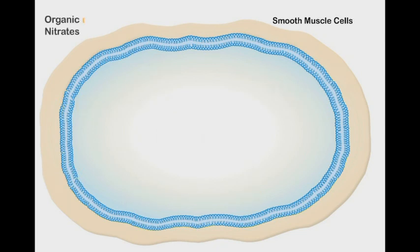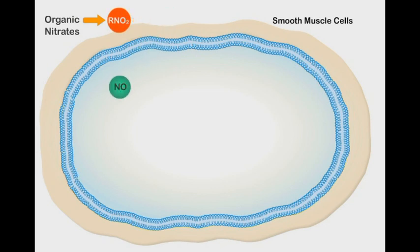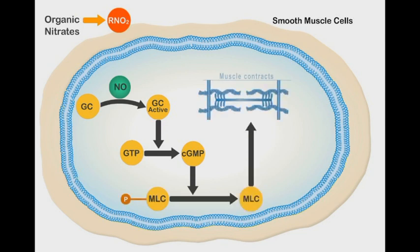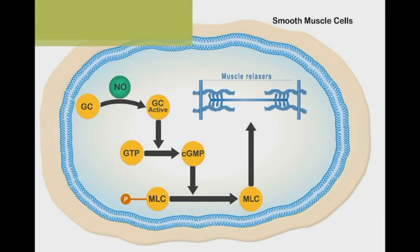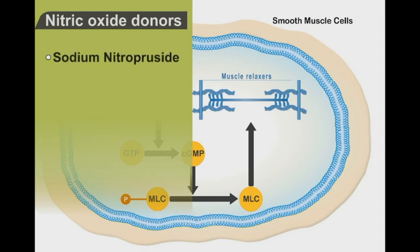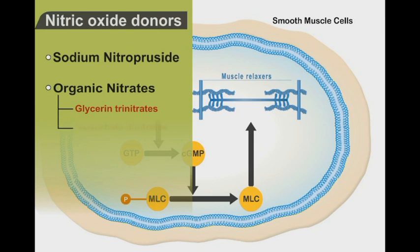Some nitric oxide donors, such as sodium nitroprusside, release their nitric oxide in the blood, and nitric oxide molecules then diffuse into the smooth muscle cells where they cause relaxation. Nitric oxide donors include sodium nitroprusside and organic nitrates such as glyceryl trinitrate, isosorbide dinitrate, and isosorbide mononitrate.